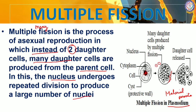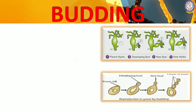Next is budding. There are two organisms to consider: yeast, which is unicellular, and hydra, which is multicellular. This is an important one-mark question — give an example of a unicellular organism that undergoes budding, or a multicellular organism that undergoes budding. In yeast, a small bud develops and slowly grows into an organism, and you can see chains of buds. In hydra, a small bud develops in the stem region, grows into a small hydra, and then detaches from the parent body.